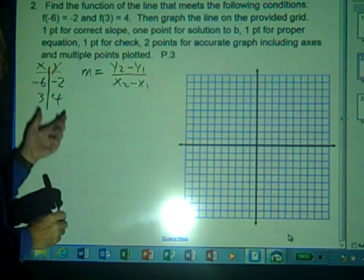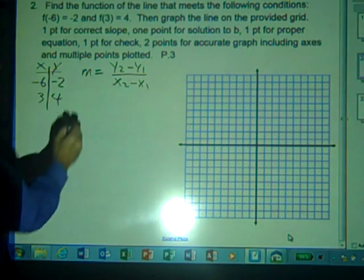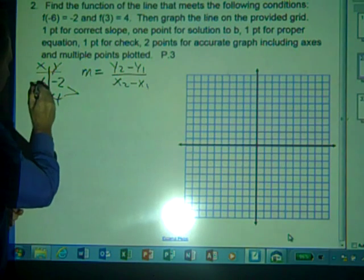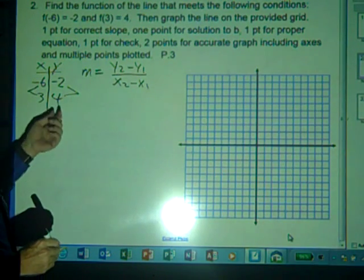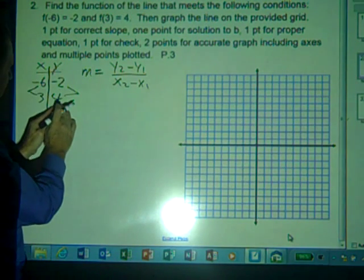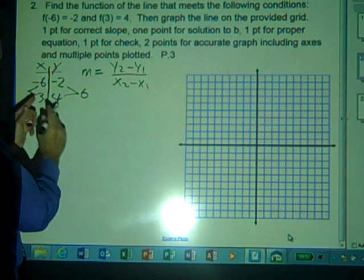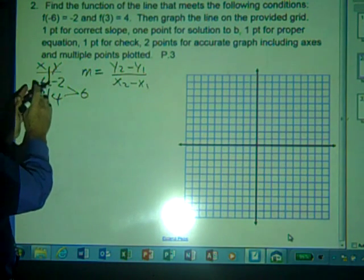What we have in this table is simply the slope formula rewritten in a graphical organizer form. We can take the bottom minus the top: 4 minus negative 2, which is 6, and 3 minus negative